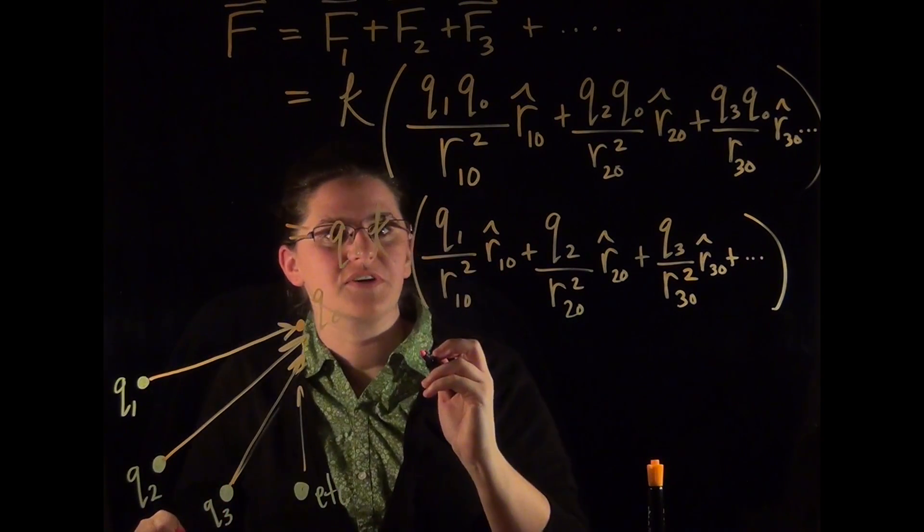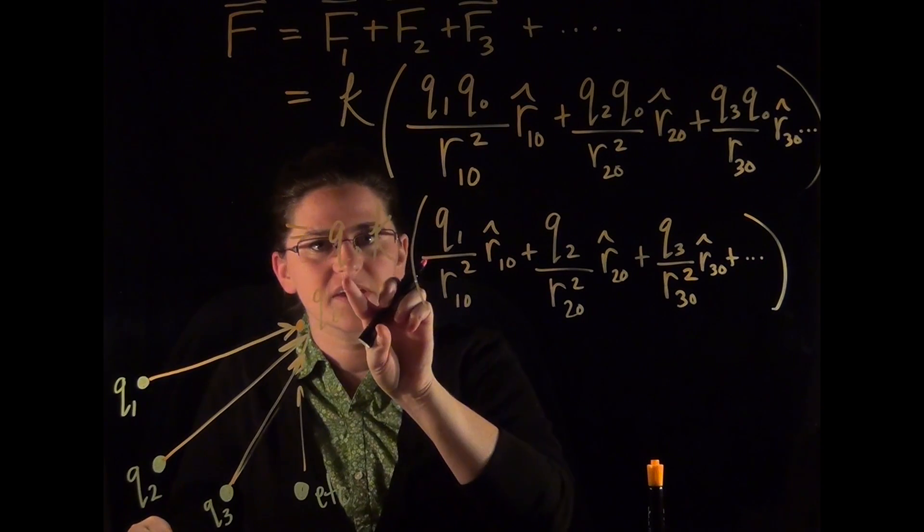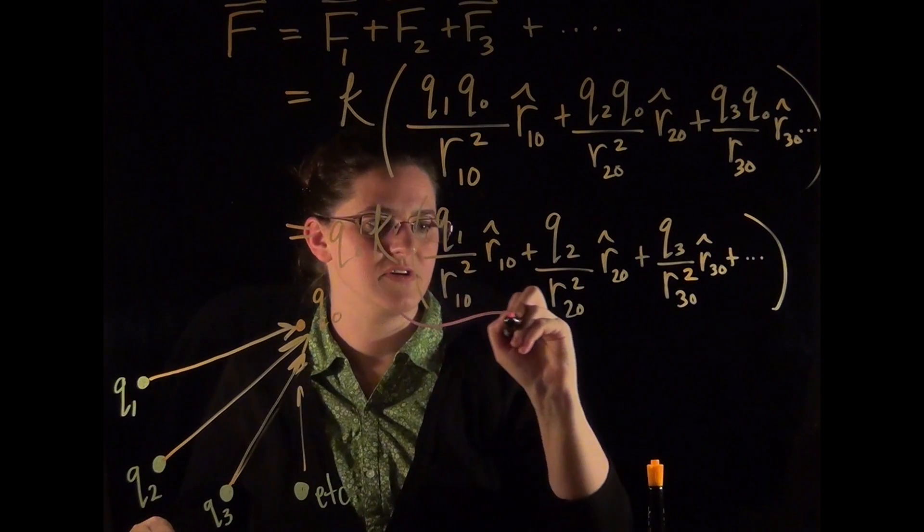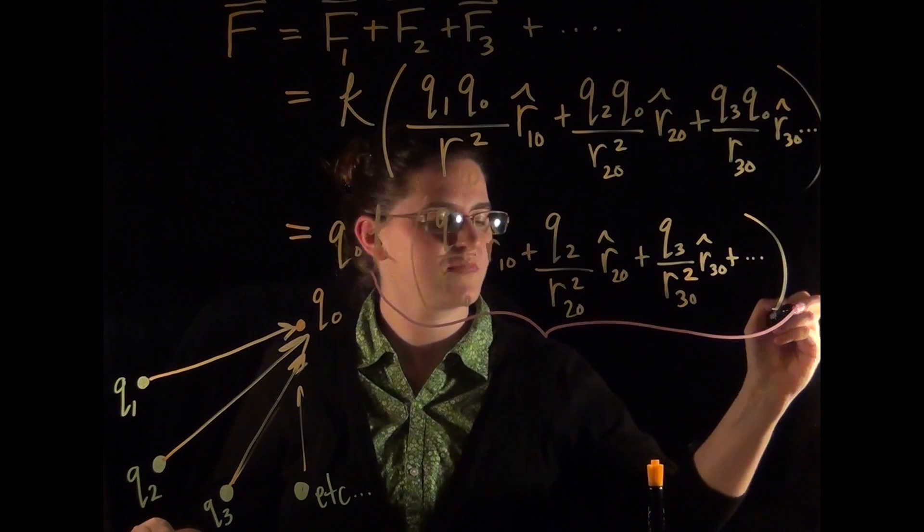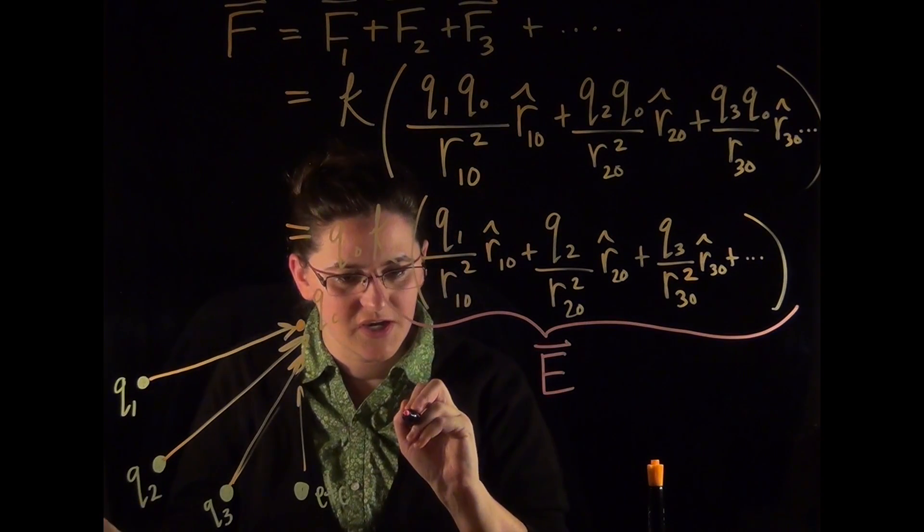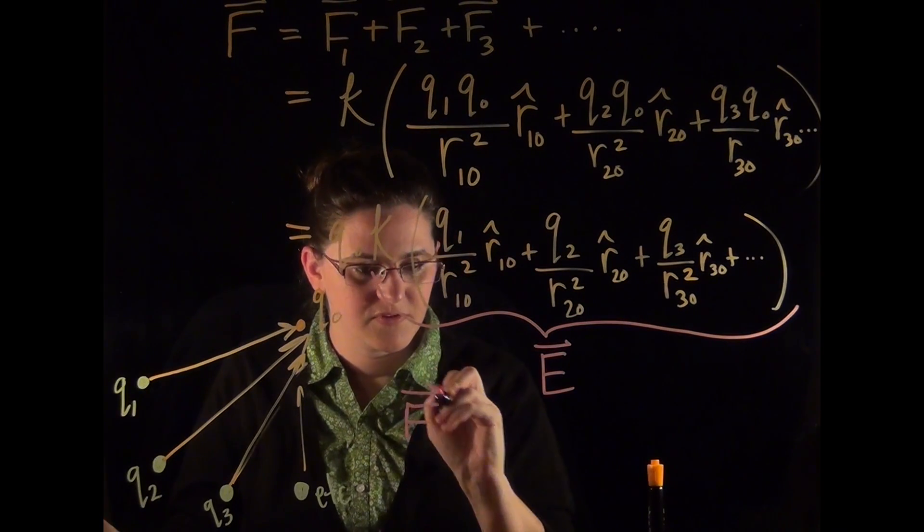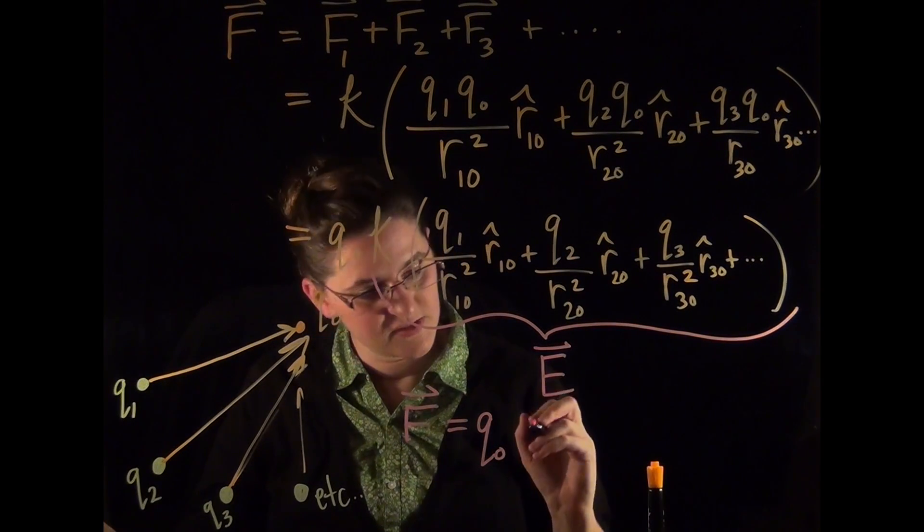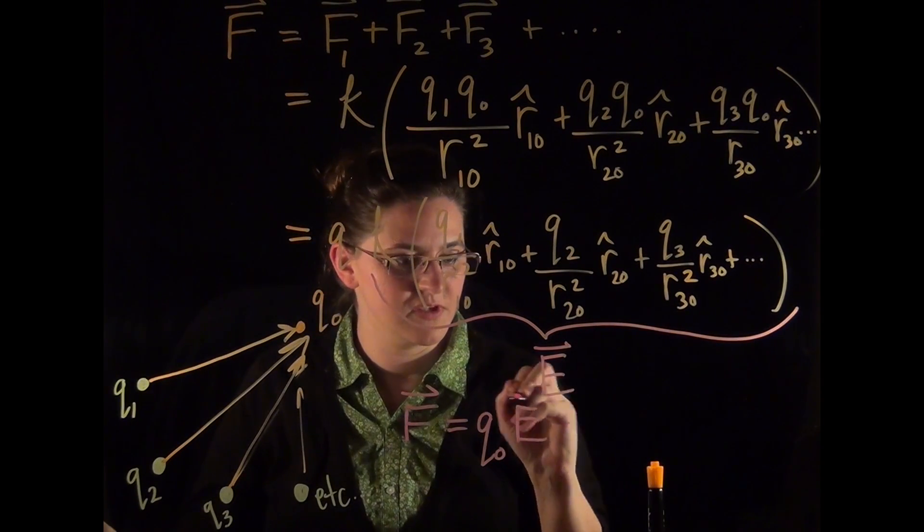The electric field is really everything except the test charge. So here's the electric field. Electric field vector E, such that F is equal to the test charge value Q0 times the electric field E. Both of them are vectors.